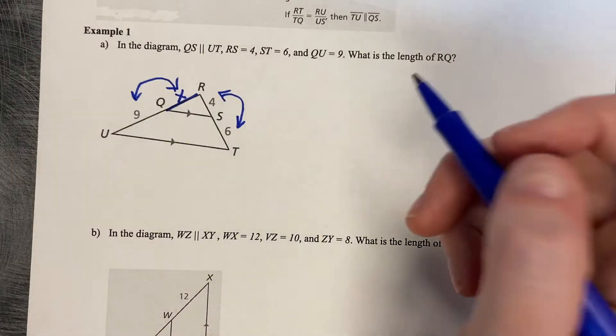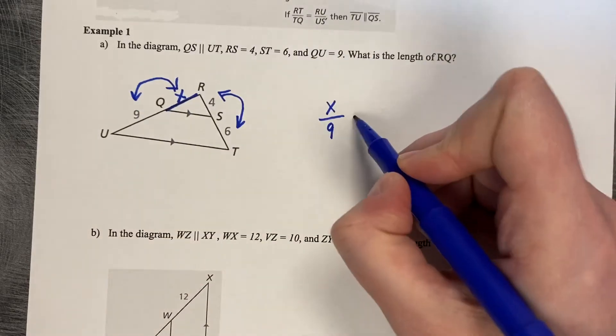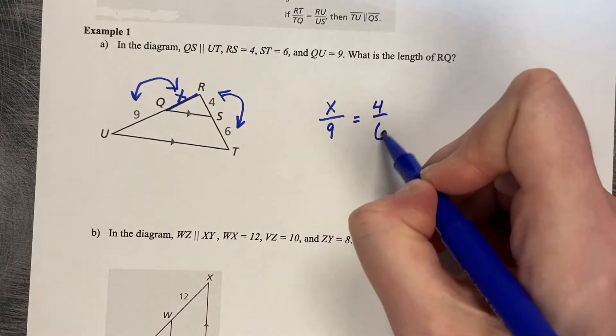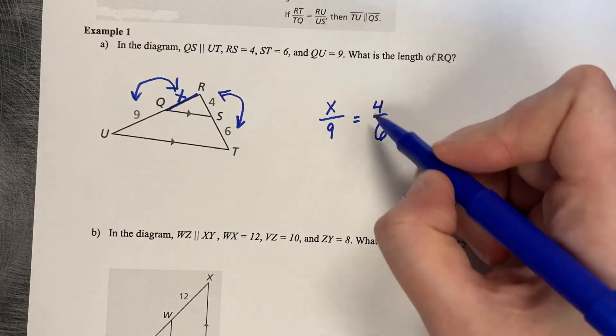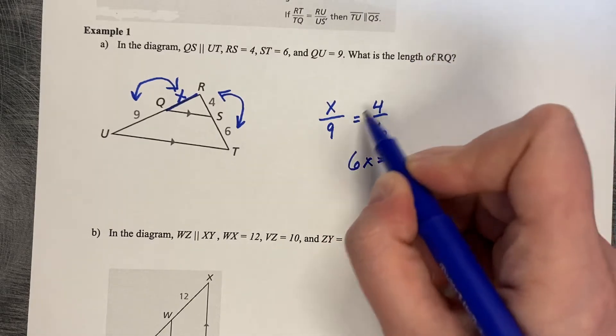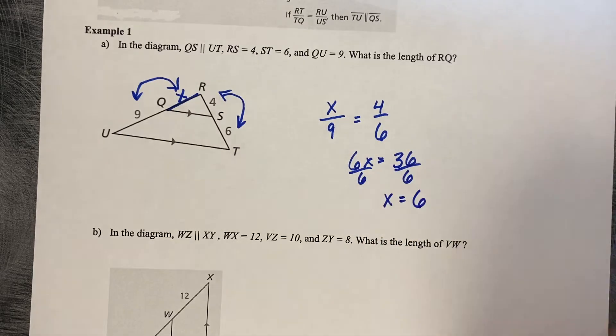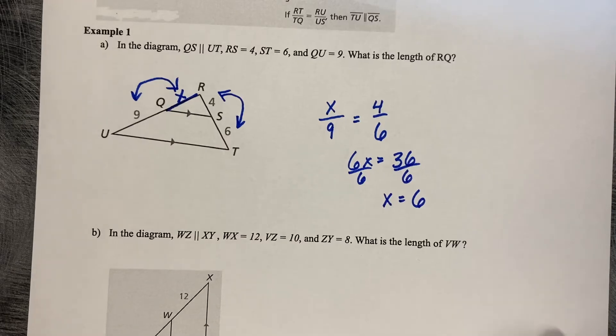So we can say that X compares to 9 as 4 compares to 6. Cross multiply: X times 6 is 6X, 9 times 4 is 36. Divide by 6 and X equals 6.